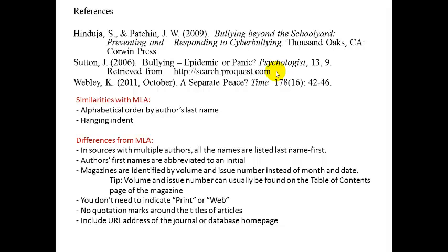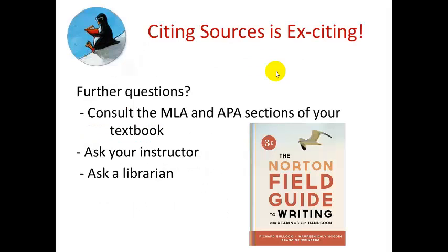So there seems to be a lot of information, but actually it's very simple — it's really the easiest part of the entire writing process. The hard part is coming up with things to write about and making your sentences come out articulately. Citing sources is simply a very important part, but it's something that's very easy to do once you know the basics. If you have any further questions, consult the MLA and APA sections of your textbook, or ask your instructor. Here at Goodwin College, we have a lot of very helpful library staff always willing to answer student questions about how to cite sources. Thank you very much for listening, and good luck with your research papers.